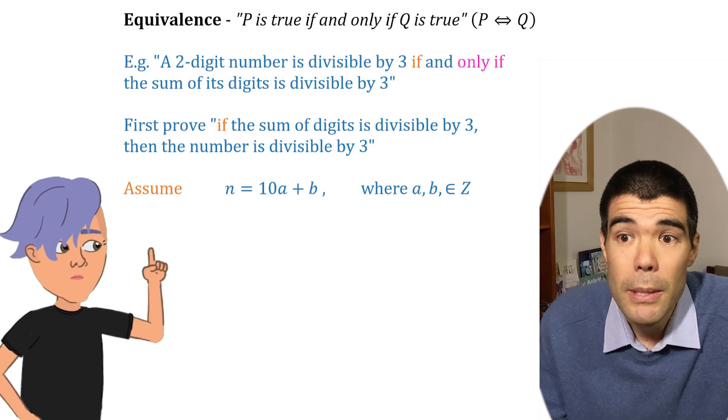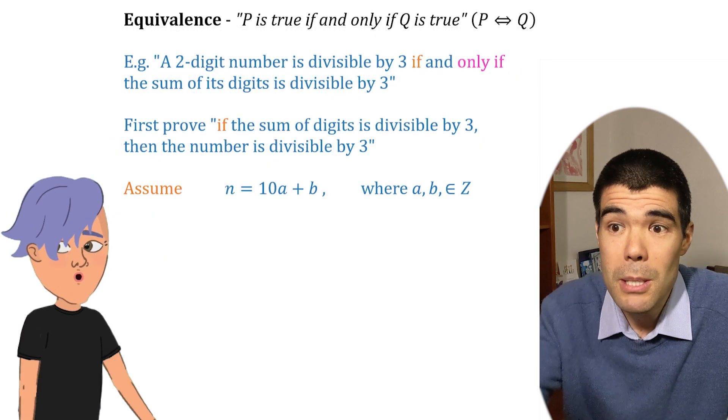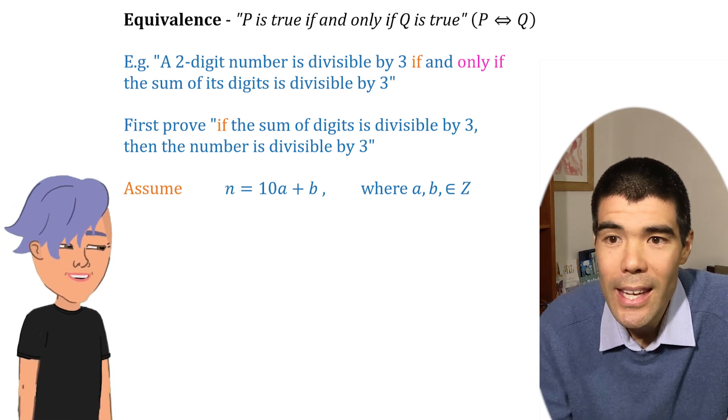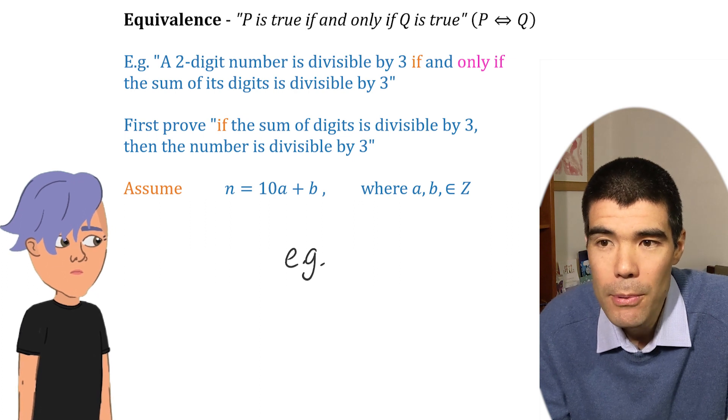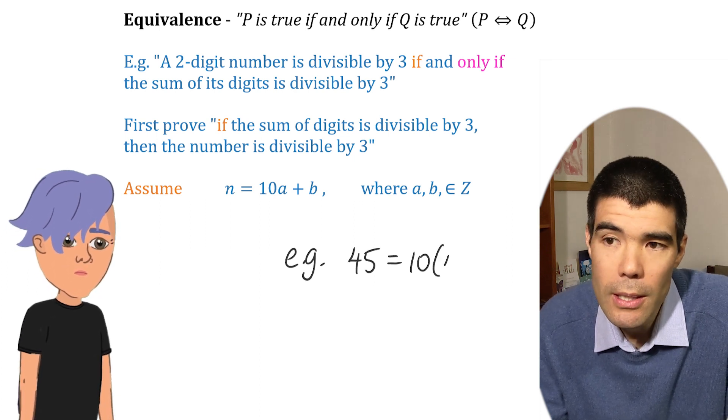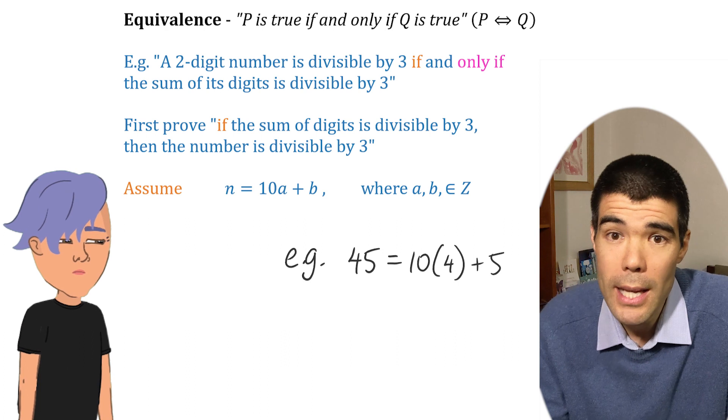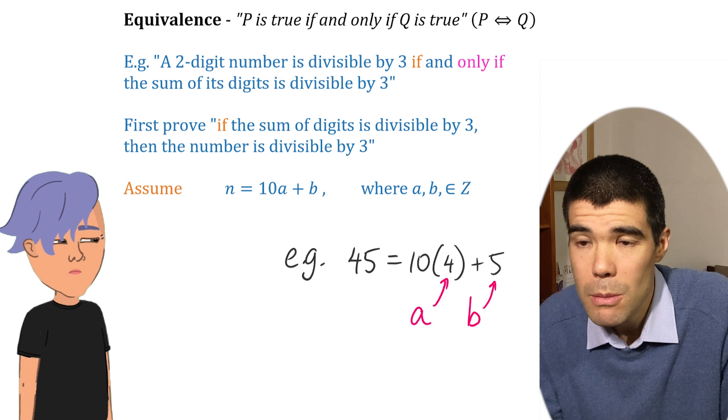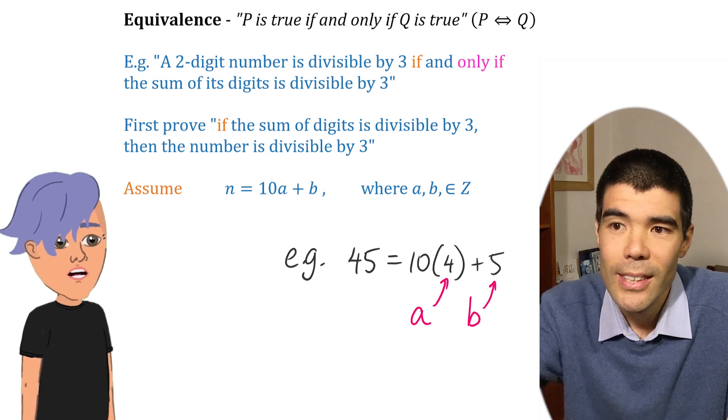So we let the number be n equal 10a plus b. Whoa, whoa, slow down, sir. Sorry. a and b are the digits. So for example, the number 45 is really 10 times 4 plus 5, because the 4 is in the tens column. So 10a plus b. Ah, okay, I get it.